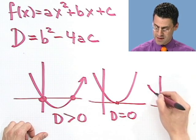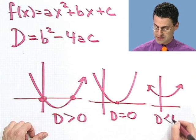And finally, maybe it doesn't cross at all. This is when the discriminant is, in fact, negative.